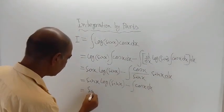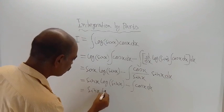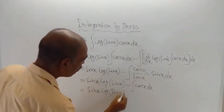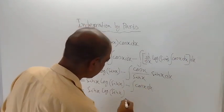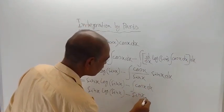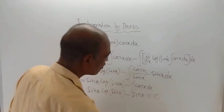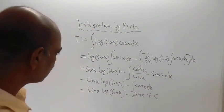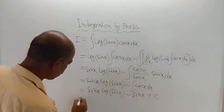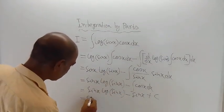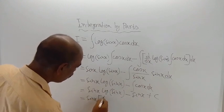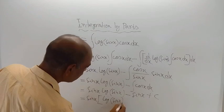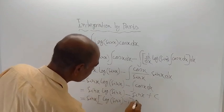The result is sin x into log of sin x minus the integration of cos x, which is again sin x, plus a constant of integration C. Now this sin x can be taken as common.